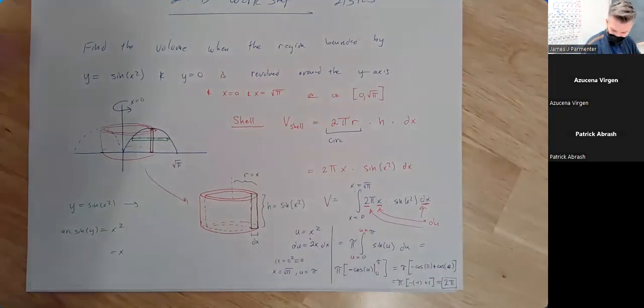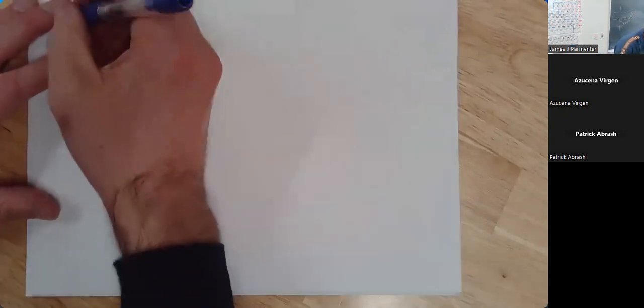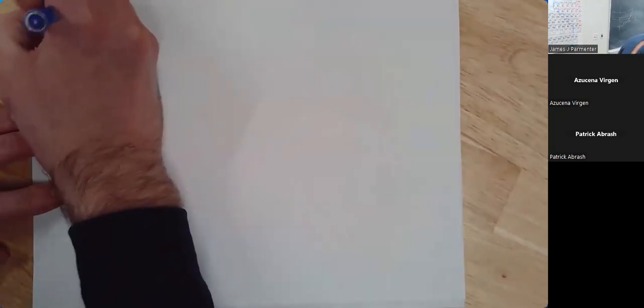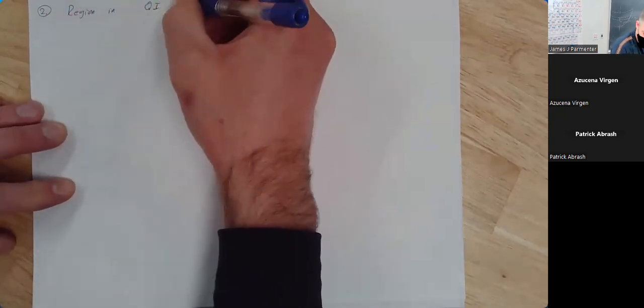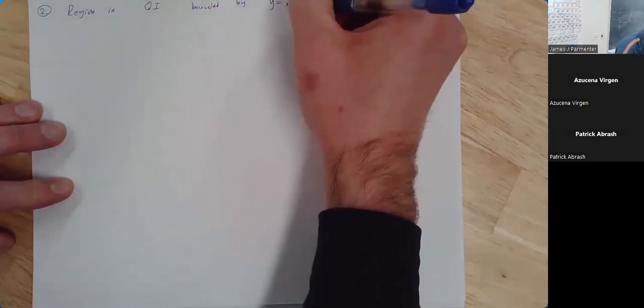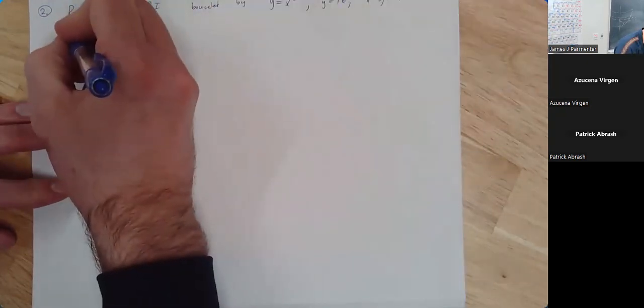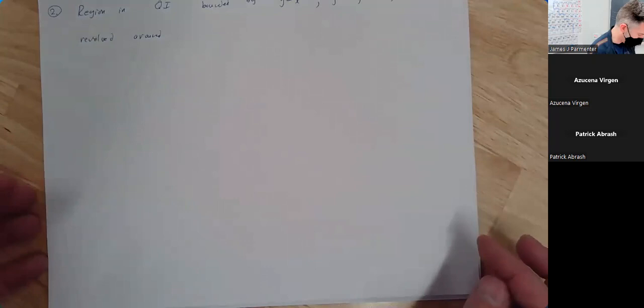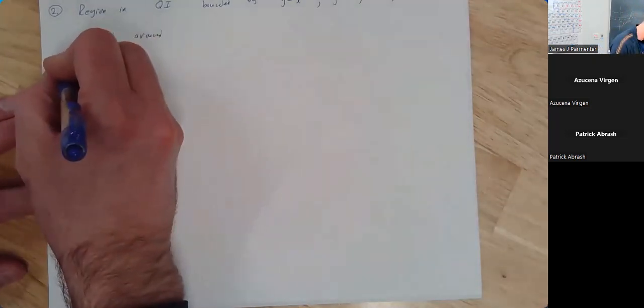Let's look at one more example. The region in quadrant one bounded by y equal to x squared, y equal to 16, and y equal to 8x, revolved around the x-axis. We'll set up both of these — revolved around the x-axis first, and then we'll try a different axis to see how the radius changes.